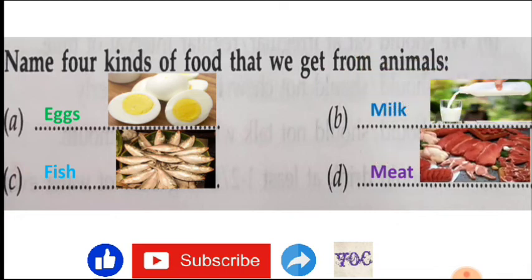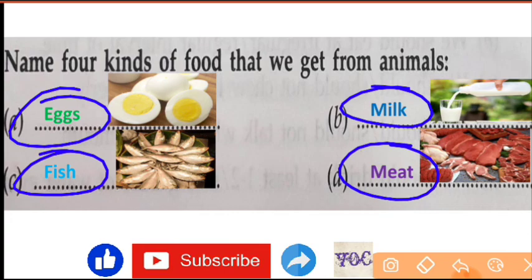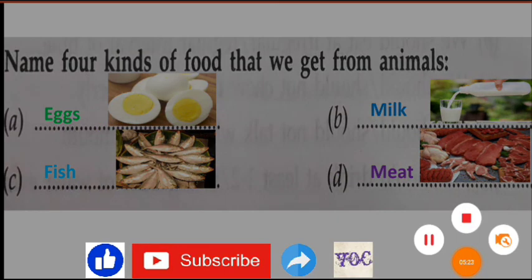Okay, so whenever you get a question to write foods that we get from animals, you can write easily: that is eggs, milk, fish, and meat. Okay, so that is very important also for your health.